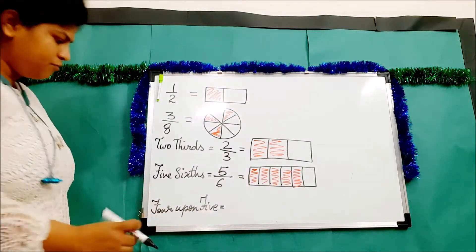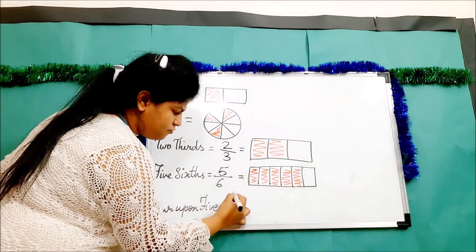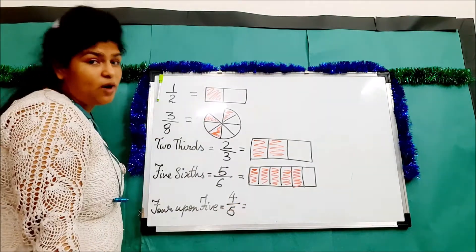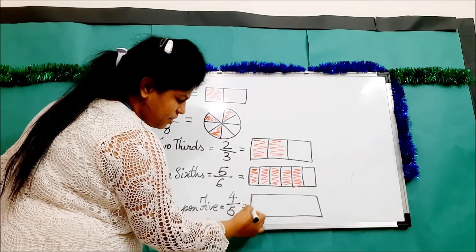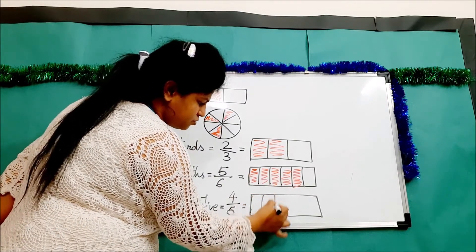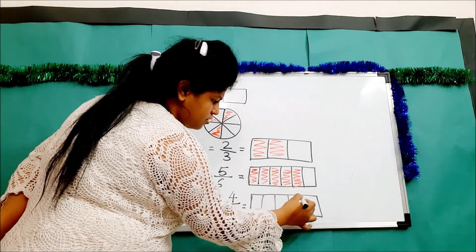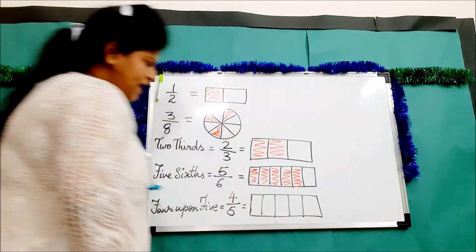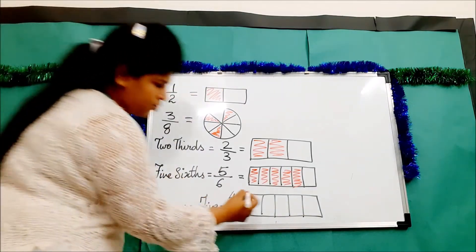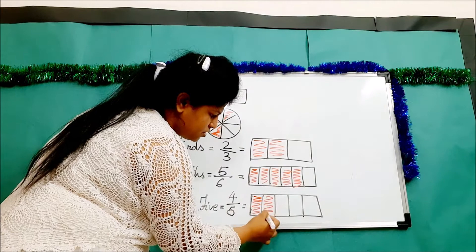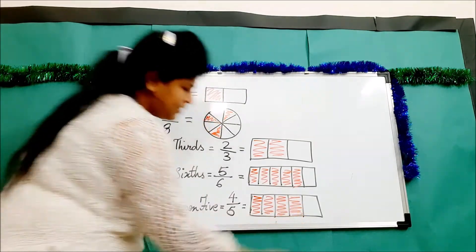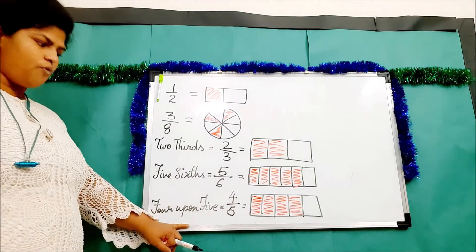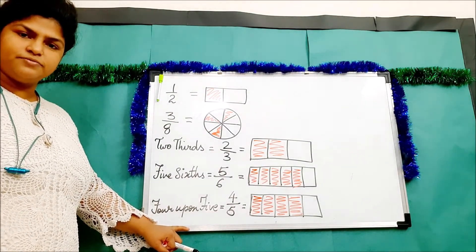Four upon five. How will I show four upon five? I will make something which is five parts: one, two, three, four, and five. And I will shade four of them: one, two, three, and four. And that's how I can show four upon five.